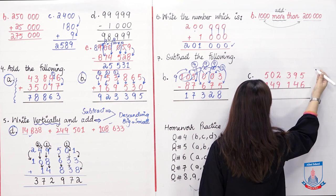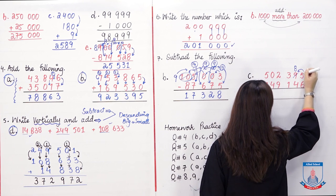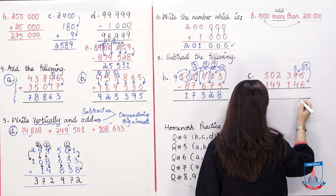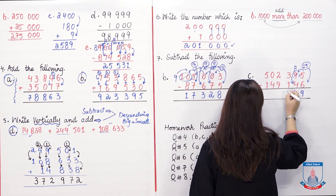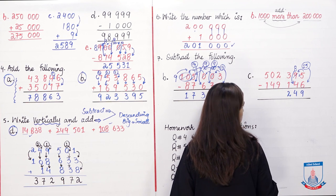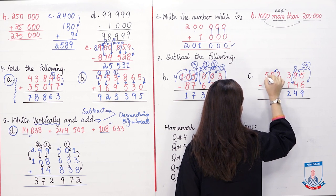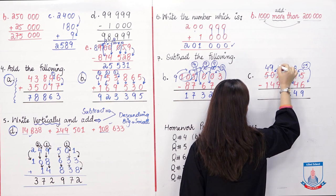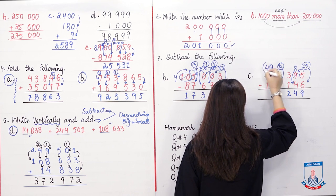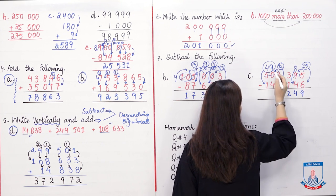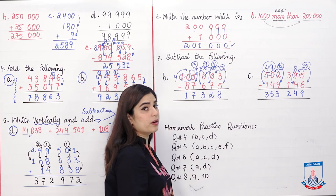Part C: Starting right to left, 5 minus 6 is not possible, so 5 borrows from 9. 9 becomes 8, and 5 becomes 15. 15 minus 6 is 9. Then 8 minus 4 is 4, 3 minus 1 is 2. Now 2 minus 9 is not possible — borrow from the two digits together (treat 50 as a unit; after lending, becomes 49). 12 minus 9 is 3. Then 9 minus 4 is 5, 4 minus 1 is 3. The answer is 353,249. The remaining 2 parts are homework.